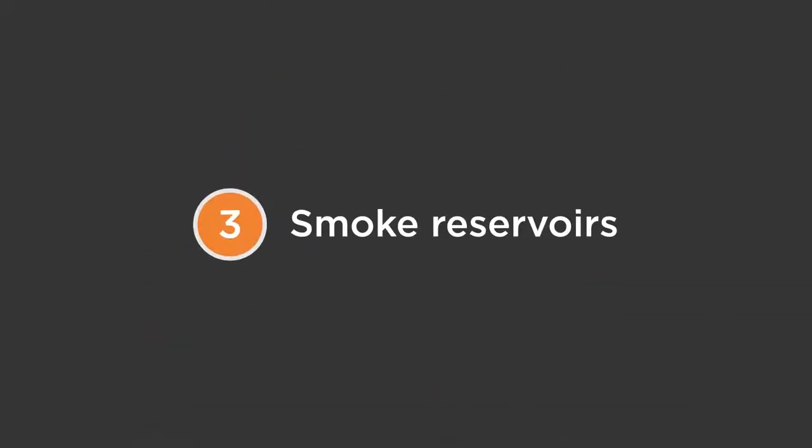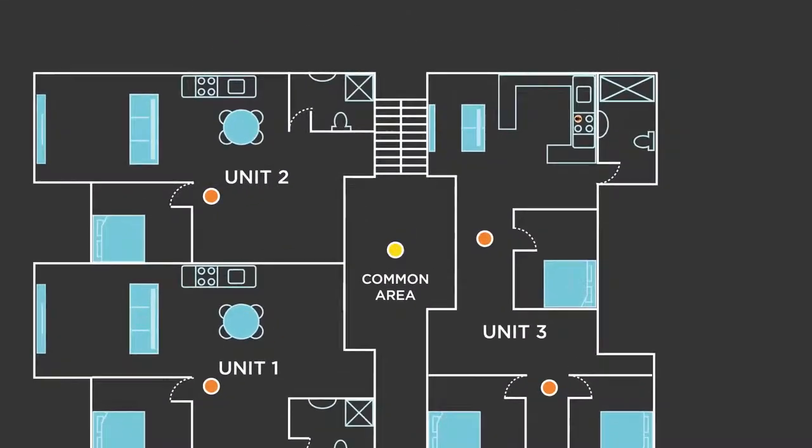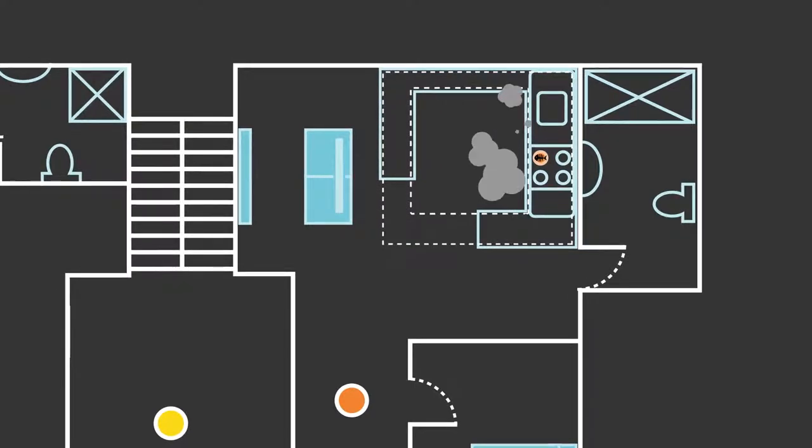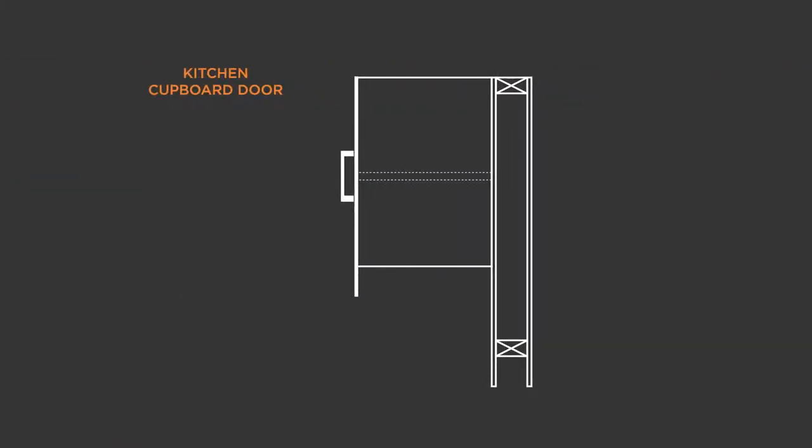Three, smoke reservoirs. Baffles around kitchen areas can act as a reservoir which restricts contaminants from reaching the detector. This can be achieved by installing bulkheads. Likewise, extending the cupboard doors below the base of the cupboard is a simple measure that can assist in delaying activation of the alarm. This curtain system forms a reservoir underneath overhead cupboards and retains cooking vapors and fumes.